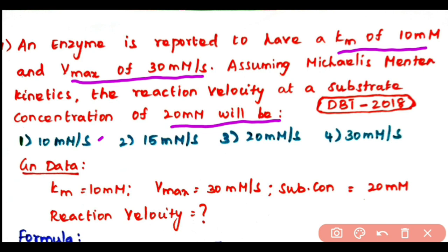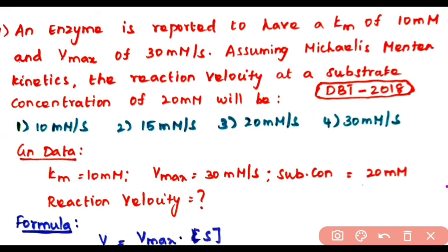The options are: 10 millimolar per second, 15 millimolar per second, 20 millimolar per second, or 30 millimolar per second. In this problem, the given data is: Km (Michaelis-Menten constant) is 10 millimolar, Vmax (maximum velocity) is 30 millimolar per second, and substrate concentration is 20 millimolar.